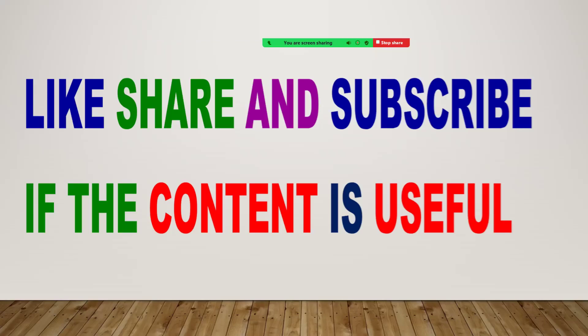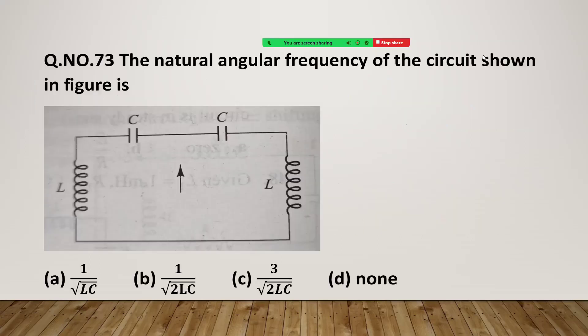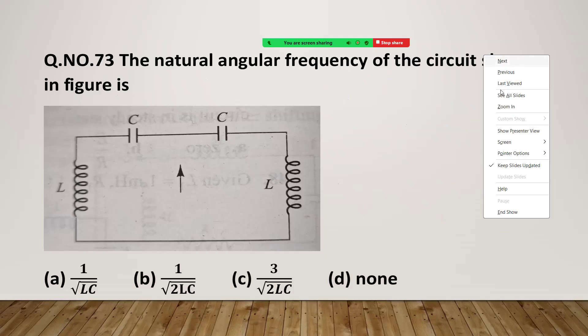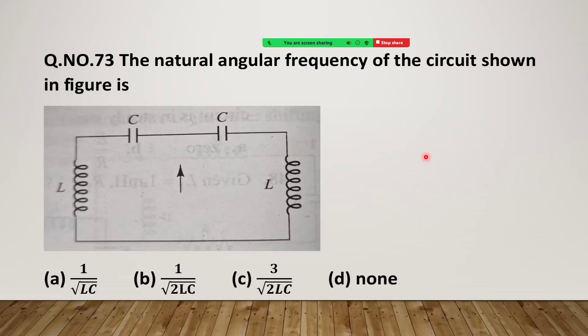Hi students, in this lecture I am going to discuss problems based on LC oscillations. Let us see the first one. The question asks for the natural angular frequency of the circuit shown in the figure. Given here are two capacitors and two inductors. We have to find the omega value, and we have learned that omega equals 1 by root LC.